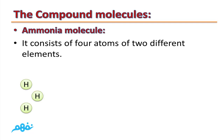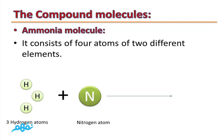Ammonia is formed from three hydrogen atoms plus one nitrogen atom. When they combine together, they form NH₃, which is the ammonia molecule — formed of four atoms of two different elements.